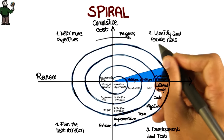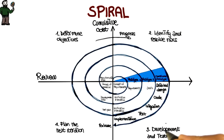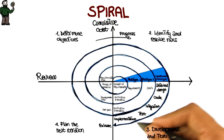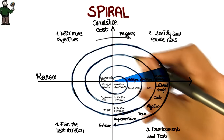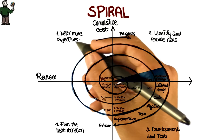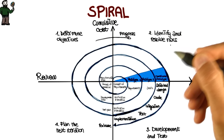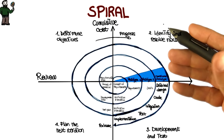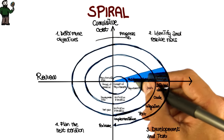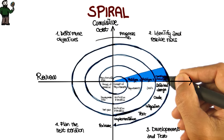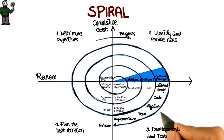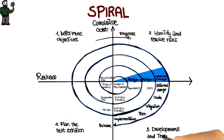The four phases are: determine objectives, identify and resolve risks, development and test, and plan the next iteration. A software project will go through these four phases in an iterative way. In the first phase, the requirements will be gathered. In the second phase, the risks and the alternate solutions will be identified and the prototype will be produced. Software and tests for the software are produced in the development and test phase, which is the third step of the process.